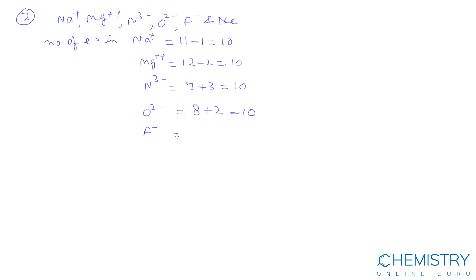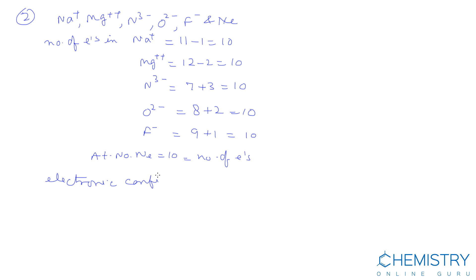Number of electrons in F⁻: atomic number of F is 9, plus 1, equals 10. Atomic number of neon is 10, which equals its number of electrons. The electronic configuration is 1s² 2s² 2p⁶. Since the number of electrons and electronic configuration are the same in all these species, they are isoelectronic.